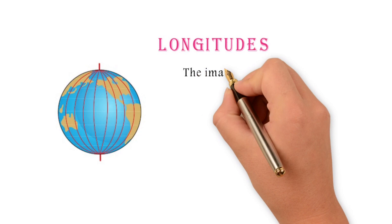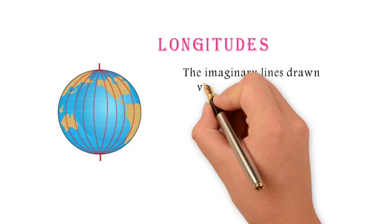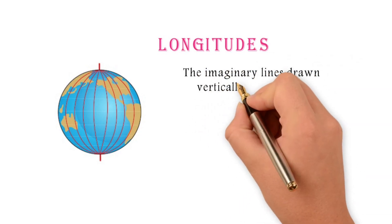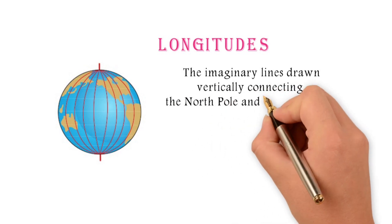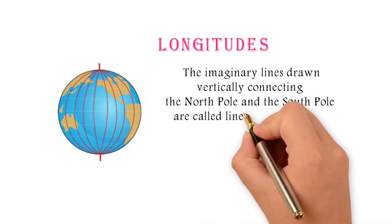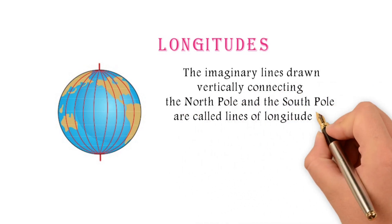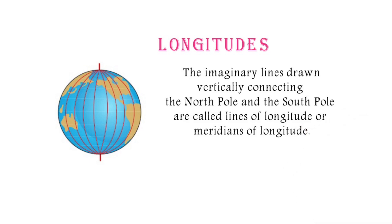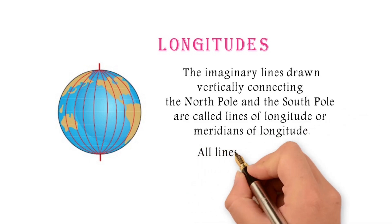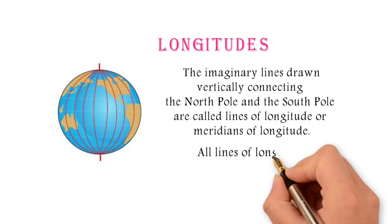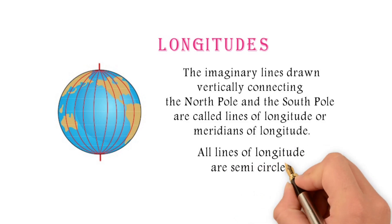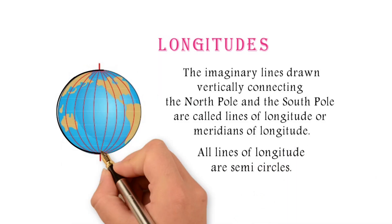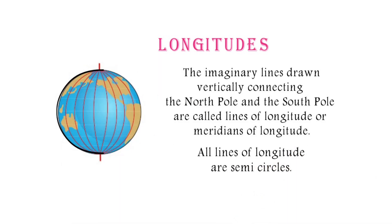The imaginary lines drawn vertically connecting the North Pole and the South Pole are called Lines of Longitudes or Meridians of Longitudes. All lines of longitudes are semi-circles.